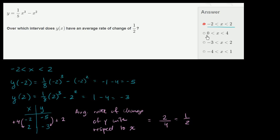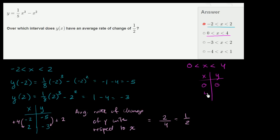So let's find the average rate of change between that point and that point. I'll do this one in purple: 0 is less than x which is less than 4. So the table: x and y. When x is 0, y is going to be 1/8 times 0 minus 0, so y is just 0. When x is 4, y is going to be 1/8 times 4 to the third — 4 to the third is 64, 1/8 of 64 is 8 — so it's 8 minus 4 squared which is 16. 8 minus 16 is negative 8.